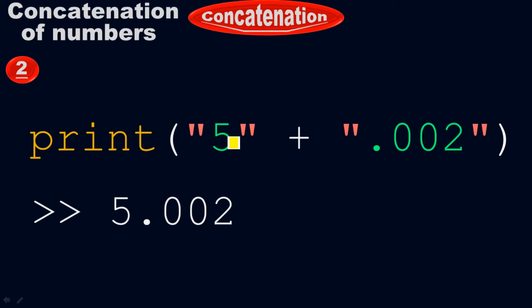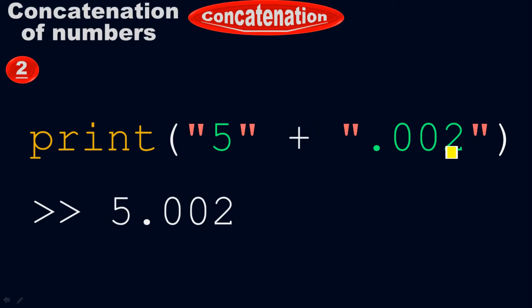Again, look here. I enclosed 5 inside the quotes and 0.002 inside the quotes, so 5 comes nearer to 0.002, which becomes a single number: 5.002. As I told you, in concatenation we do exactly like applying a glue on two sides of the items to bring them together to make a single thing. 5 is my one object, 0.002 is my second object — I apply the glue between them and brought both numbers together to make the single number 5.002. Don't miss quotes; whether you put single quotes or double quotes, it's up to you. But make sure you put quotes for both numbers — only then you will get 5.002.